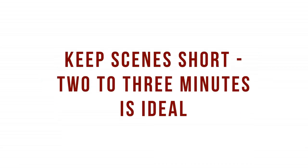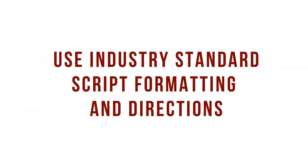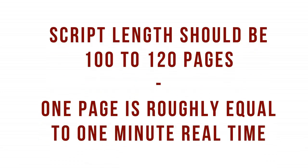Keep the scene short — between 2 to 3 minutes is ideal. Vary the scene length, the kind of action and the settings. This gives a varied pace and a rhythm to the overall story. Always use standard script formats and directions. Don't try and invent your own, it will not be appreciated. Keep your script length from 100 to 120 pages. One page on a movie script is equal to about 1 minute of real time.